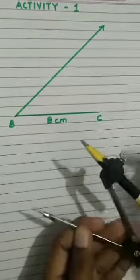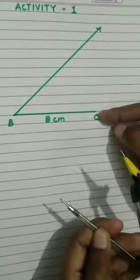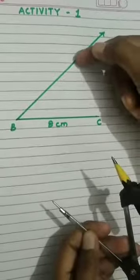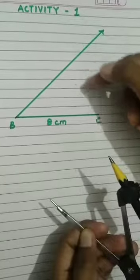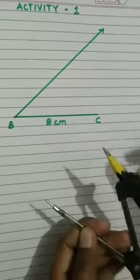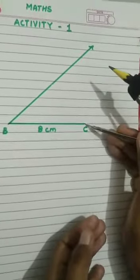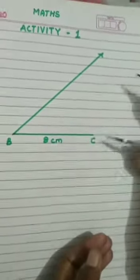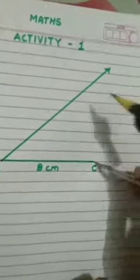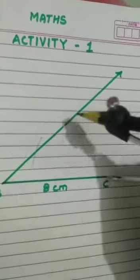Now the third side is to be drawn. For that, the measurement given is AC is equal to 6 cm. We have learned that by placing the compass on point C, a 6 cm arc can be drawn. Here.